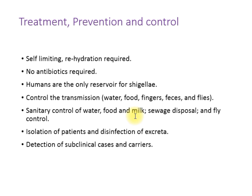Proper sewage disposal and control of flies are other control measures. Patients can be isolated and excreta should be properly disinfected. Subclinical cases and carriers should be detected and prevented from working in food settings — they should not be involved in handling or serving food.